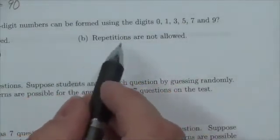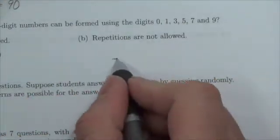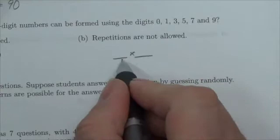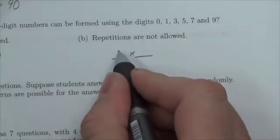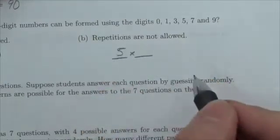Now, with this second problem here, where it says repetitions are not allowed, again, I've got two subtasks to complete. I've got to figure out what goes in this first digit, what goes in the second digit, and again, I can't put a 0 up front, so that means I've got five choices here.